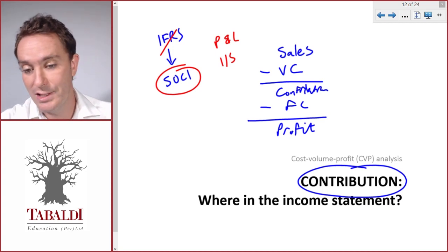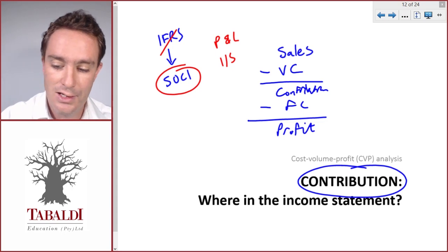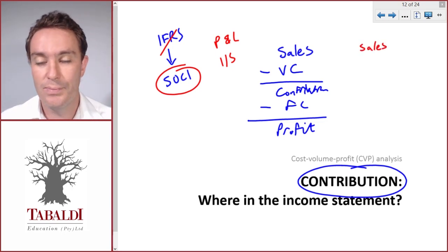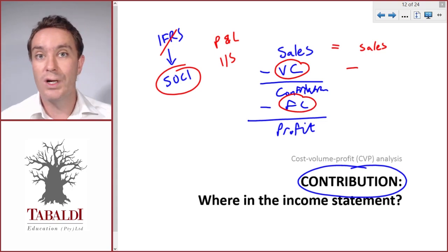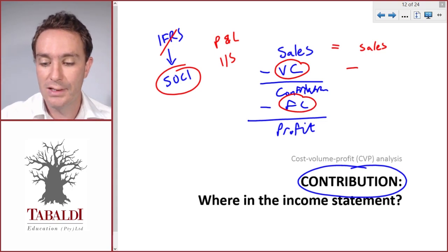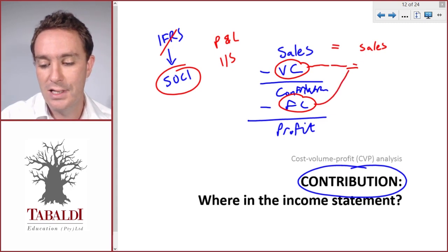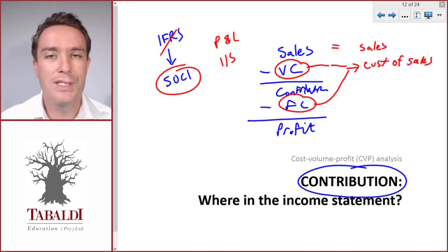Now, this is the same company that also has to prepare financial statements for reporting purposes using IFRS. The financial accountants will also report the sales - it will be the same sales value - but then they will take these costs and group them or classify them by nature. They will take all the manufacturing costs from the variable costs and from the fixed costs and they will calculate Cost of Sales. Cost of Sales includes all our manufacturing costs.